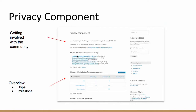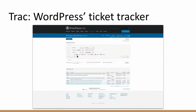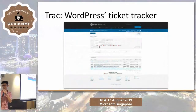So what is a ticket? A ticket is a unit of problem that needs to be fixed, and it's tracked by this software called Track — it's a WordPress ticket tracker. If you go to wordpress.org and Get Involved, there's a link that brings you to Track. It's usually a huge list of tickets — thousands, tens of thousands. But you can apply filters to narrow things down.